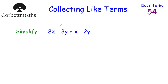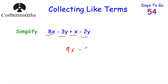Next, simplify 8x − 3y + x − 2y. Starting with the x's: 8x + x = 9x. Now the y's: −3y − 2y = −5y. So the answer is 9x − 5y. Well done if you got that.